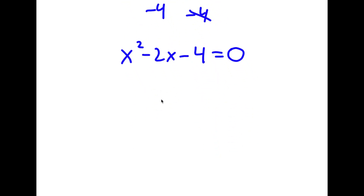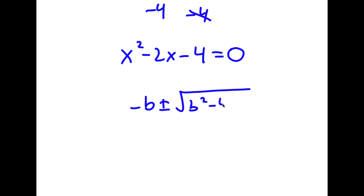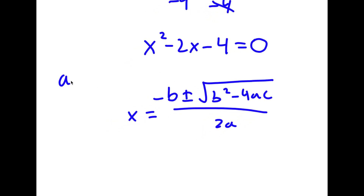To solve this I'm going to use the quadratic formula, which is negative b plus or minus the square root of b squared minus 4ac, all over 2a. In this case, a is 1, b is negative 2, and c is negative 4.